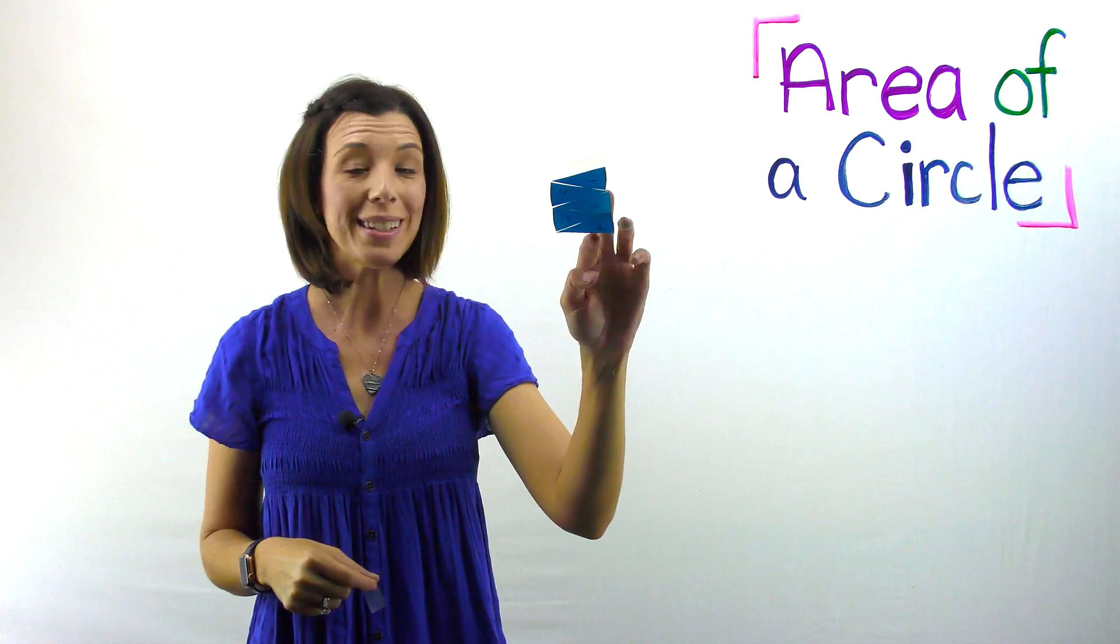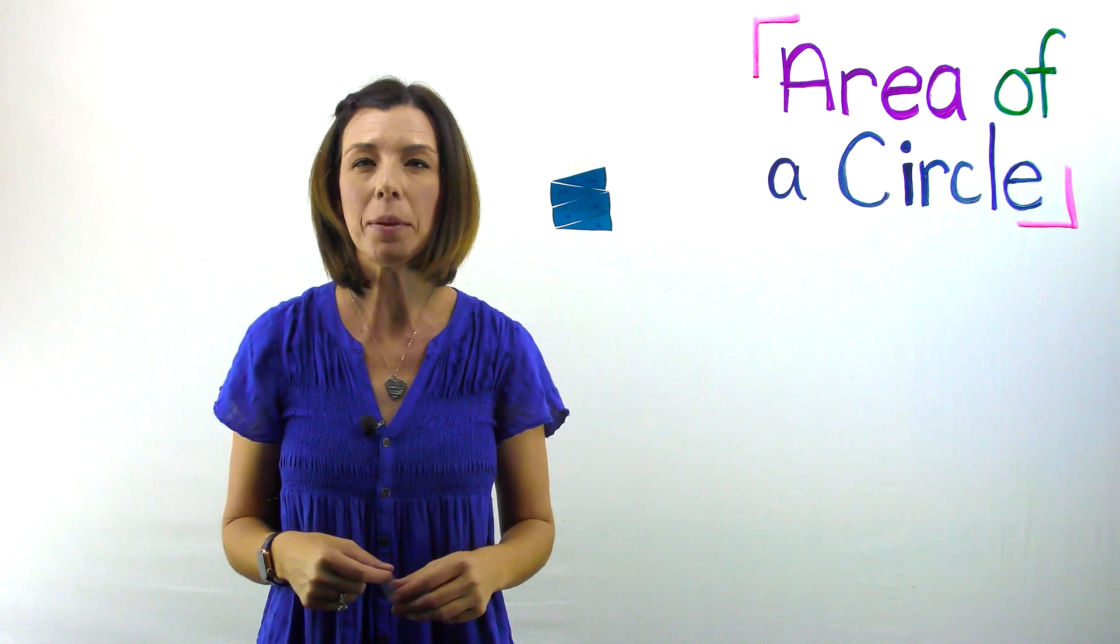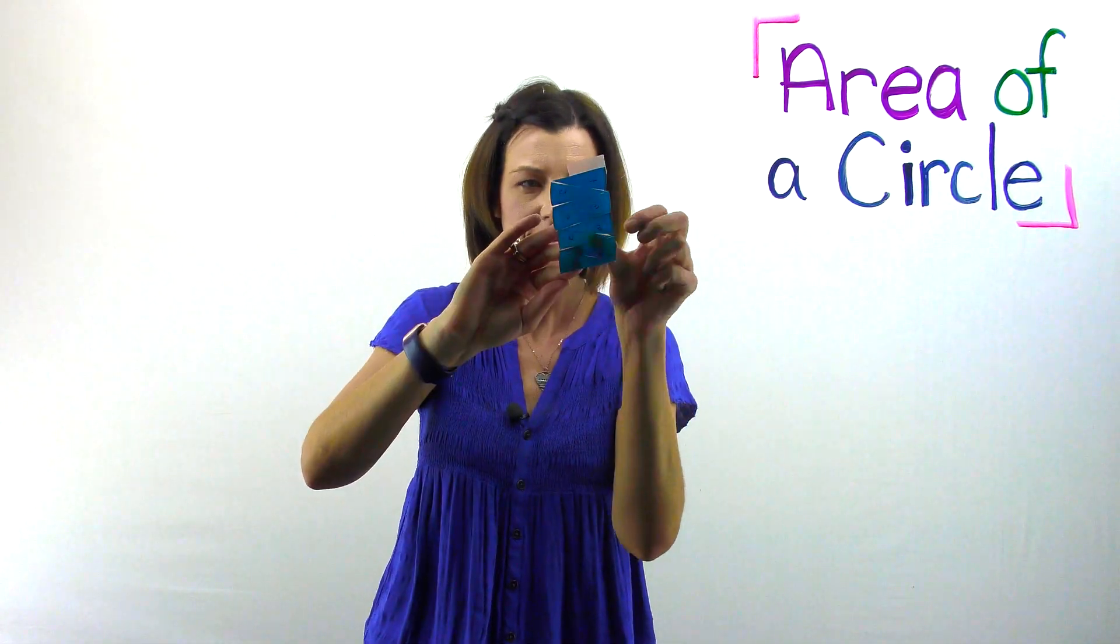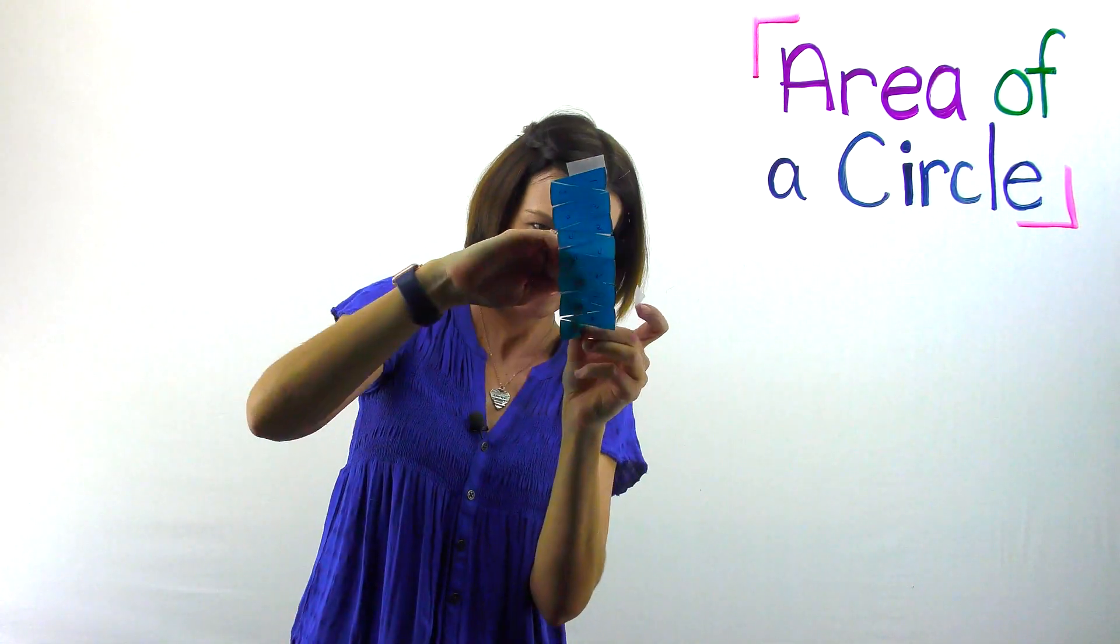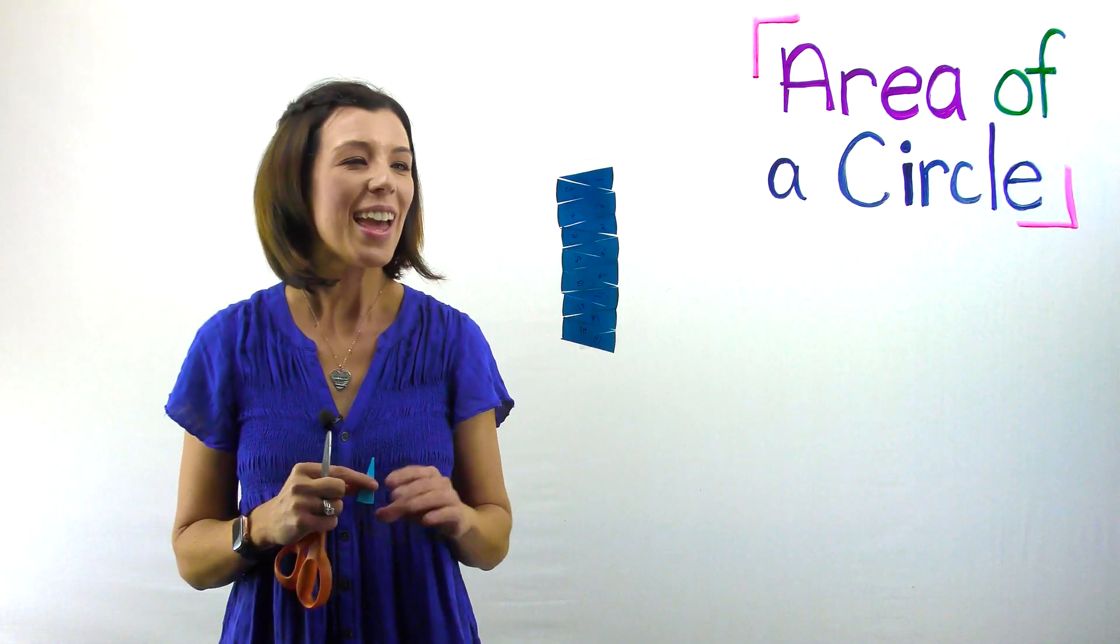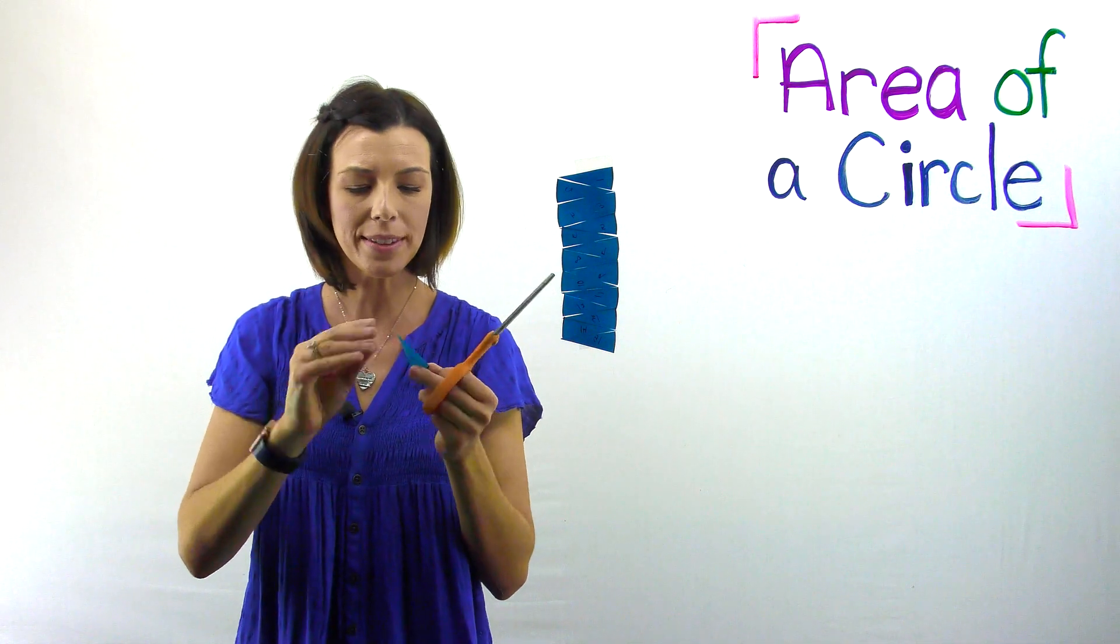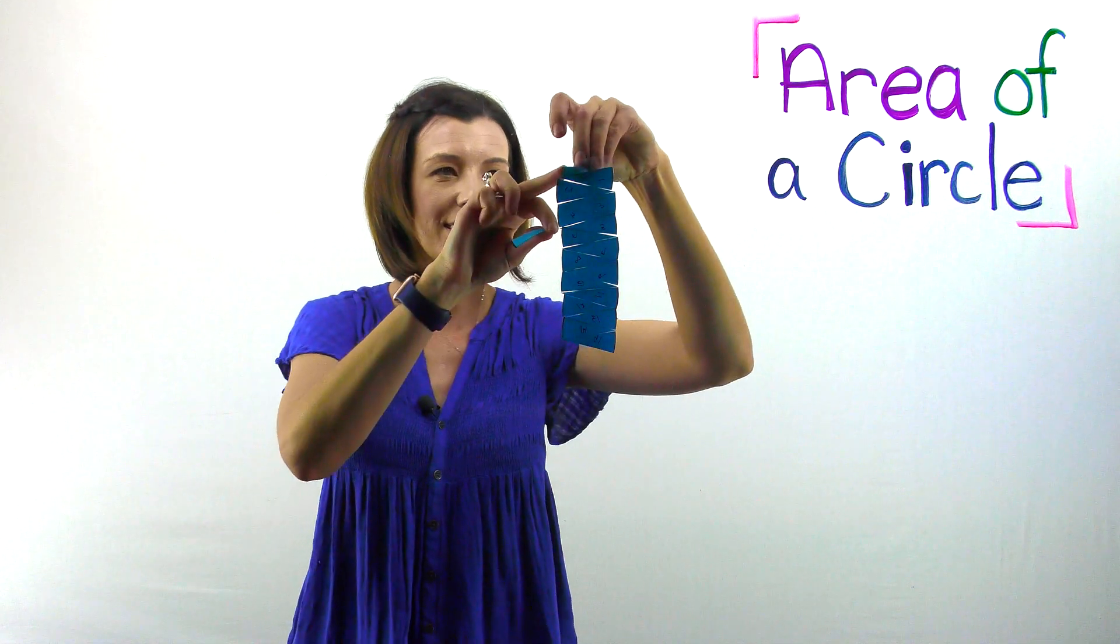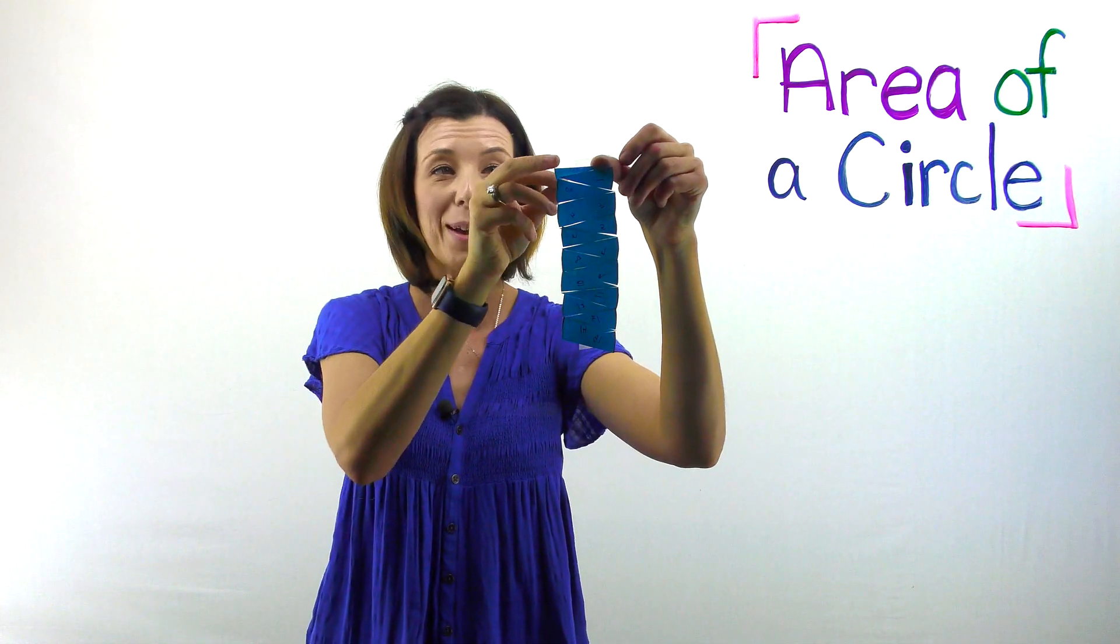Once you've got your pieces cut apart, you can start puzzling them together. See if you can make a rectangle with them. Now that you've gotten 15 on there, take your 16th piece and I want you to cut it in half. We're going to use this to put one piece on top and one piece on bottom.